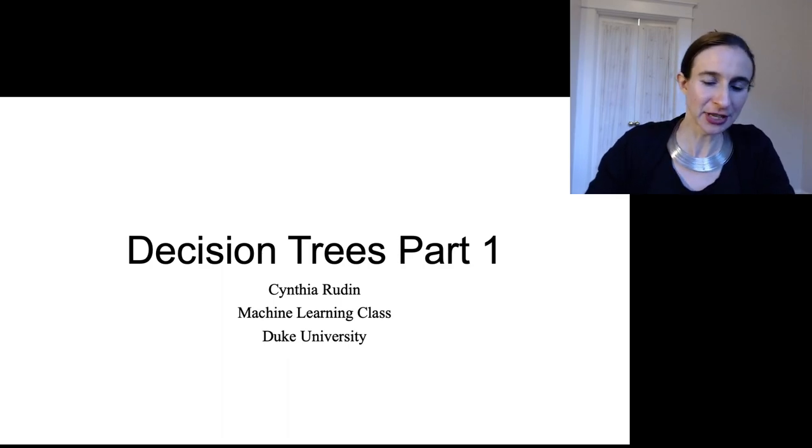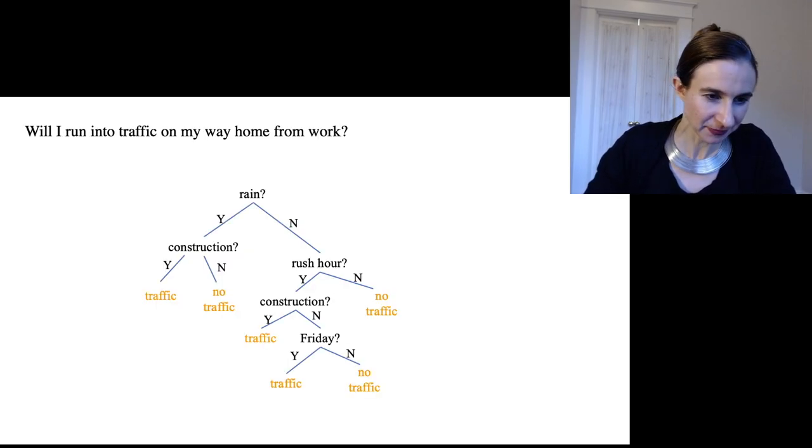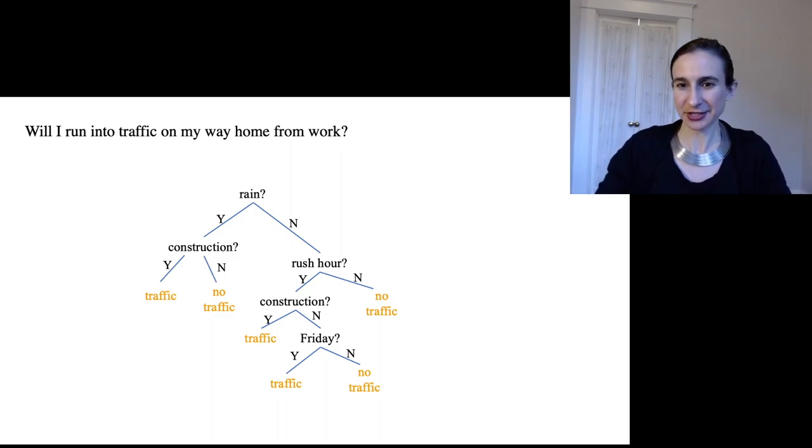Okay, so this is the first of several lectures on decision trees. So this is an example of a decision tree. This is just a little tree that predicts whether I'm gonna run into traffic on my way home from work.